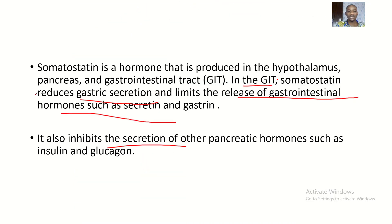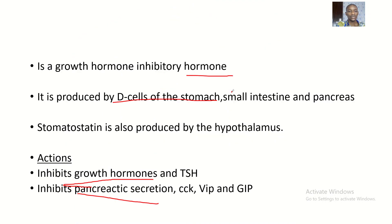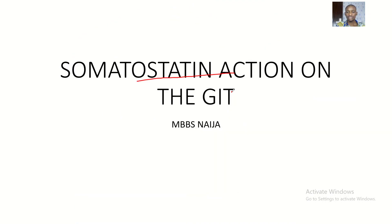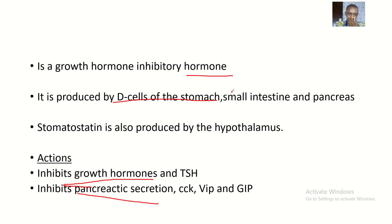Just note the areas of production: hypothalamus, pancreas, and gastrointestinal tract. The action of somatostatin on the GI tract is straightforward — just inhibitory. Note the site of production and note the other hormones that it inhibits, as well as inhibition of gastric secretions. See you guys in the next video, bye for now.